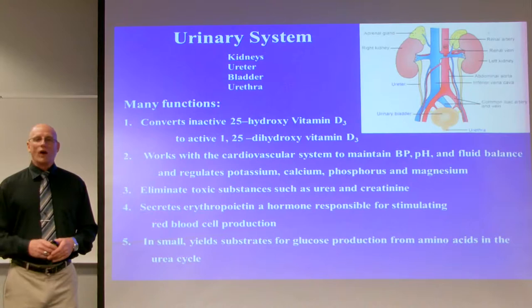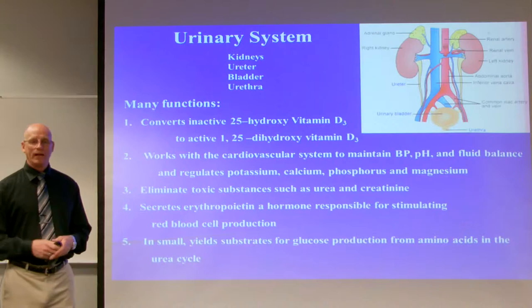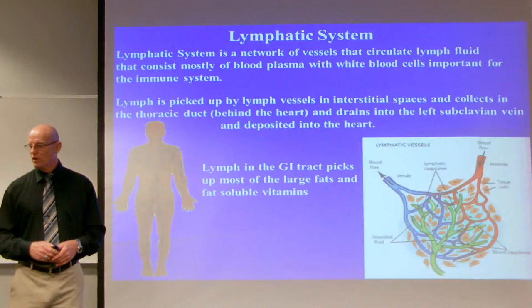The kidneys also secrete erythropoietin, a hormone responsible for stimulating red blood cell production. Additionally, the kidneys assist in the process of glucose production. At the undergraduate level you'll learn the urea cycle and the process of transamination — I'll go through a little of that in this course — but for now, know that the kidneys also assist in glucose production.